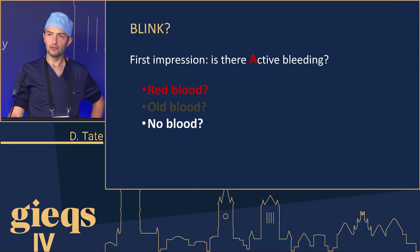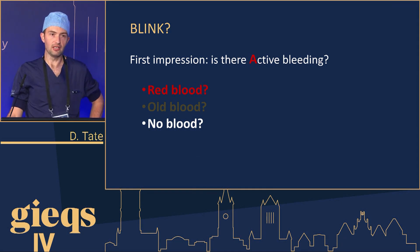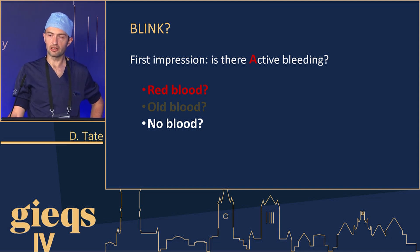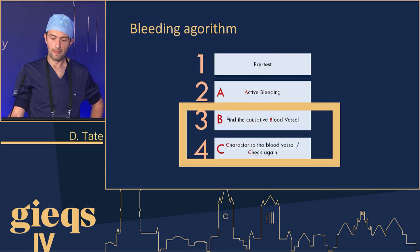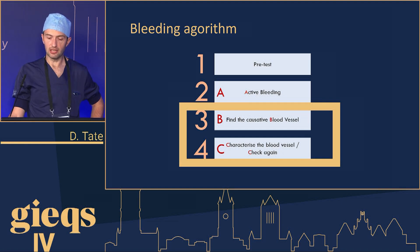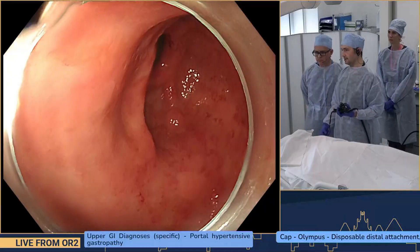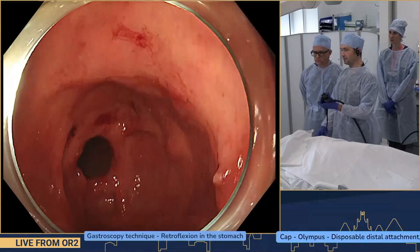Moving to the ABC — A for active bleeding. If you enter the stomach or esophagus and there is red blood, it's blindingly obvious. If there is old blood, it's potentially a marker and it's very important to note in your report. If there is no blood in the esophagus and you have a suspicion of active bleeding, you should then try to find the causative blood vessel and characterize it.